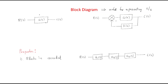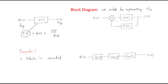Here is a block diagram of a small system. The system has the input R(S), its transfer function is G(S), and C(S) is the output. So the open-loop transfer function of the system can be written as G(S) equal to C(S) by R(S). We are representing the transfer function in terms of blocks, that's why it is called a block diagram. This is for the open-loop transfer function.